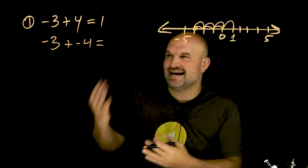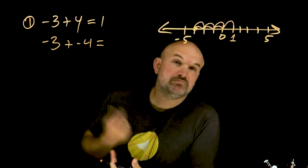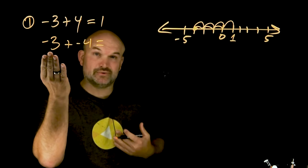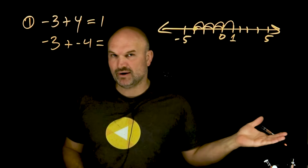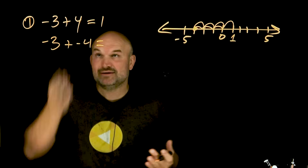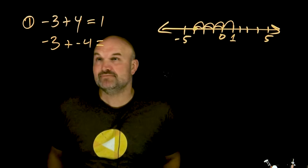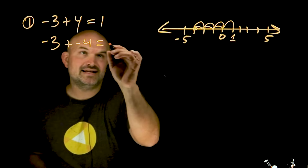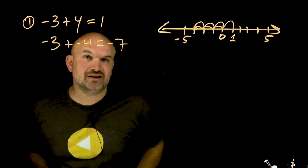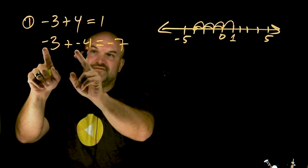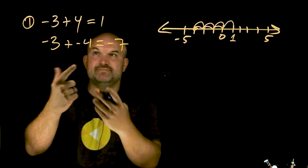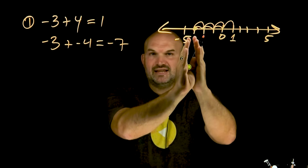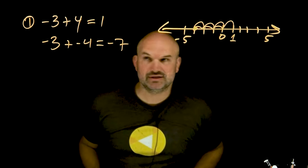Now, what if we have a negative three plus a negative four? Thinking of the money scenario, it's like you owe me $3, but then you also owe your friend $4. You don't have this money — there's no positive money in your pocket. So if you owe one person $3 and you owe another person $4, that's technically you owing $7. We're combining our two values, and if it's a negative plus a negative, it's still going to be negative. On the number line, it's like going three units to the left and then going another four more units to the left.